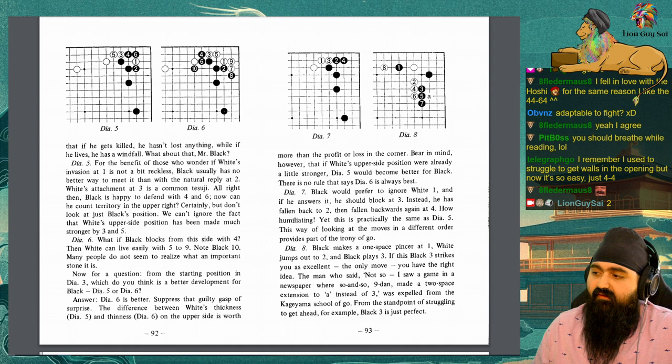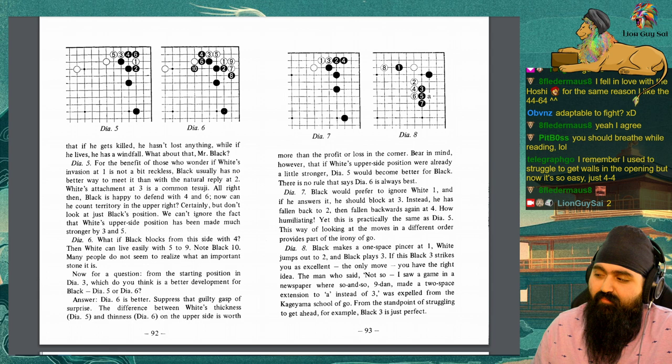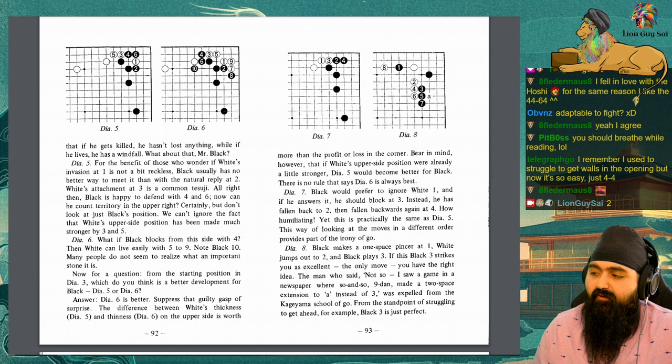Diagram 7. Black would prefer to ignore white 1, and if he answers it, he should block at 3. Instead, he has fallen to 2, then followed backwards again at 4. How humiliating. Yet, this is practically the same as diagram 5. This way of looking at the moves in a different order provides part of the irony of go.